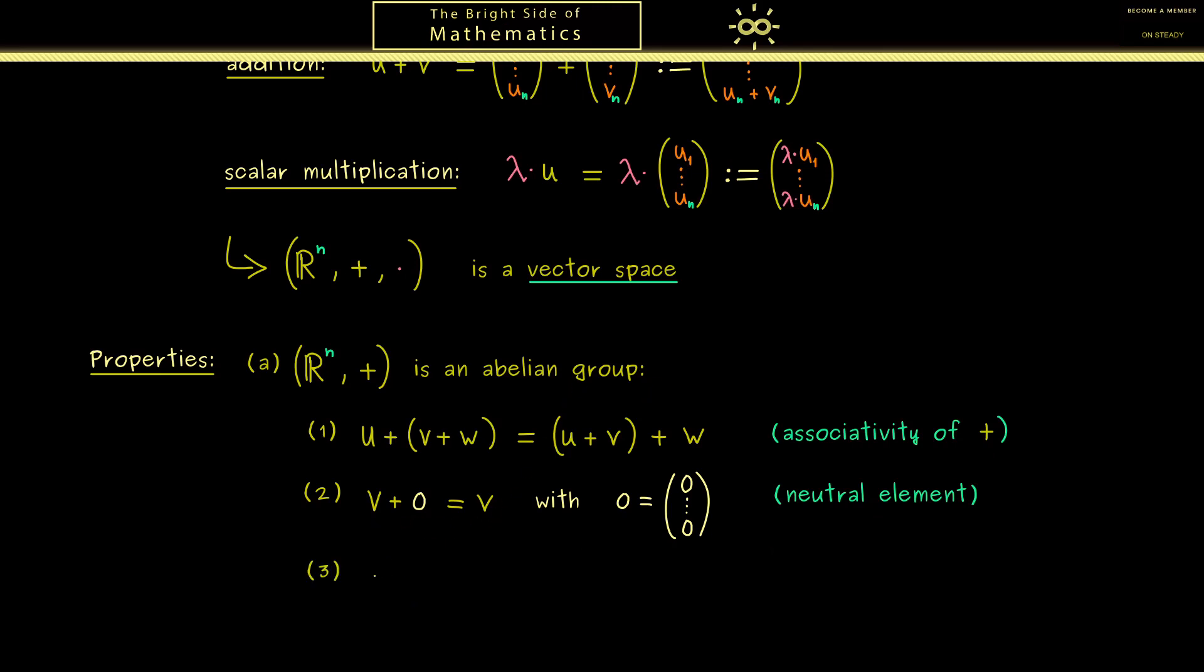Moreover, what we also need are so-called inverse elements. For vector v, this will be the element minus v. And the property here is if we add them, we get the neutral element, the zero vector. And of course, minus v is just defined by using the vector v with the components and putting a minus sign in front of each component. And now if we have inverse elements for all vectors v, in summary here we have a group.